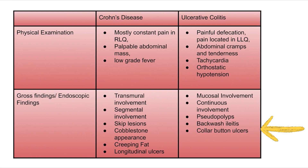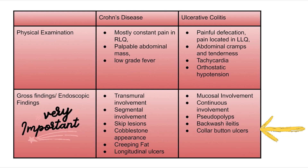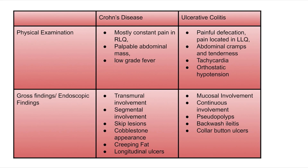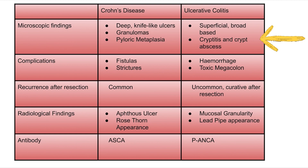The gross and endoscopic findings are very important. In Crohn's disease: transmural involvement of all layers, segmental involvement with skip lesions, cobblestone appearance, creeping fat, and longitudinal ulcers. In ulcerative colitis: collar button ulcers, backwash ileitis, mucosal involvement only, and pseudopolyps. Microscopically, Crohn's disease shows deep knife-cut ulcers, granulomas, and pyloric metaplasia, while ulcerative colitis shows cryptitis and crypt abscesses.